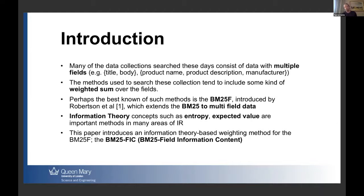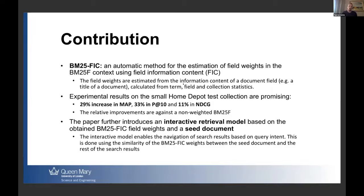On the other side, information theory concepts like entropy and expected value are common in various areas of information retrieval. What we did in this paper is use information theory within multi-field retrieval, especially for defining field weights. We created a new model called BM25FIC — Field Information Content — which is an automatic method that estimates appropriate weights for each field. The weights are calculated directly from collection statistics, so this doesn't involve any learning, making it quite fast compared to other models like BM25F where you need to learn the field weights.